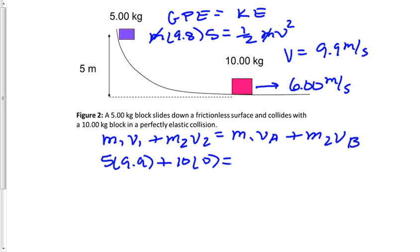We'll set that equal to, afterwards, we do not know how fast the 5-kilogram block is moving, so we'll say 5 times vₐ plus 10 times 6. 6 is the given in the question. That was actually previously solved for by a system of equations, but you will not need to do that for this question. It's done for you.